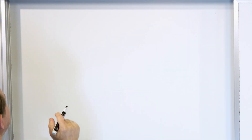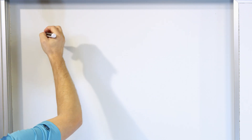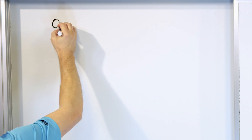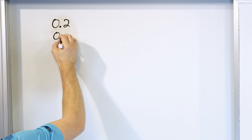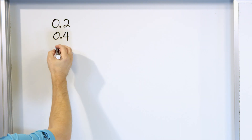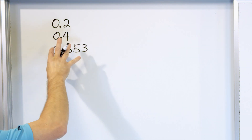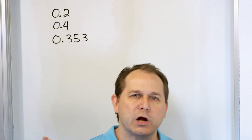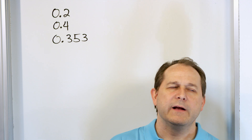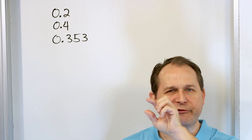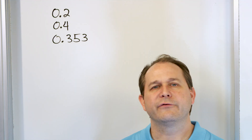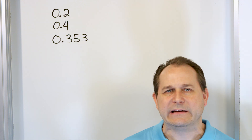Before we solve our first problem, I want to review a little bit about repeating decimals. First, let's talk about non-repeating decimals. We have decimals like 0.2, 0.4, 0.353 — these are all decimals that stop. They don't go on and on forever. In a calculator window, you would just see those digits and that would be it. Those are called non-repeating decimals.